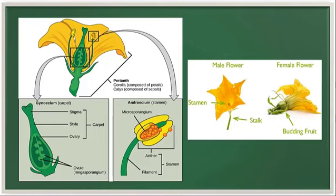While the male part, stamen, consists of anther and filament, which is also called as the stalk.